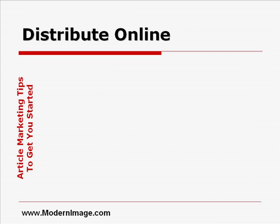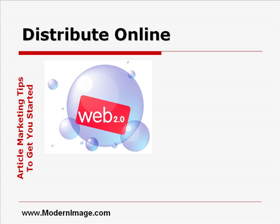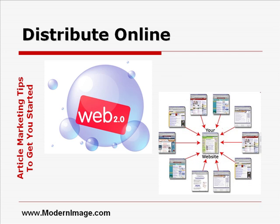Finally, distribute your article online. Even if you don't have a website yet, I still suggest that you publish your article online. You'll be setting yourself up as an expert and then you'll have instant status when your site does go live. Plus, you'll be able to add those articles to your website so you'll have instant content. I recommend that you publish your articles to ezinearticles.com because they are the most widely known article directory. It's super easy to create an account — just click the Join Now button in the top right corner — and be sure to read all of the editorial guidelines and agreements.